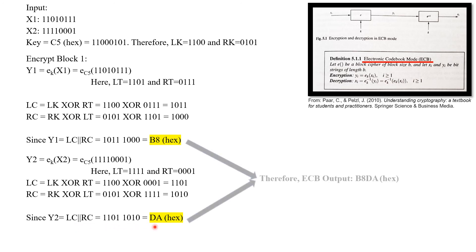Therefore we get the output Y2, which is the combination of LC and RC, as DA in hexadecimal. Finally, we combine Y1 and Y2 to get the final ECB output as B8 DA in hexadecimal.